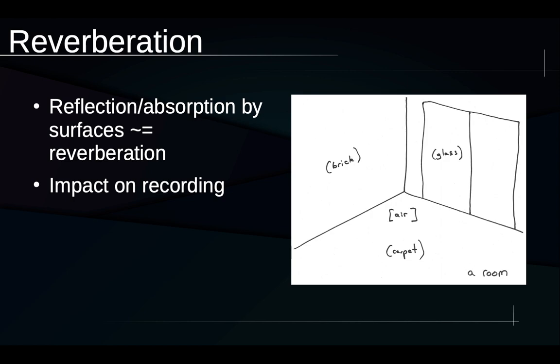Also, if we're recording, we might deliberately choose to record in a space that has a particular set of surfaces and a particular profile of reflection and absorption because we like the sound or because it serves some creative need. When we're mixing or transforming an audio project, we might deliberately want to add certain kinds of simulated or real reflections and absorptions to the work that we're doing. In another module, we'll talk about artificial reverberation.